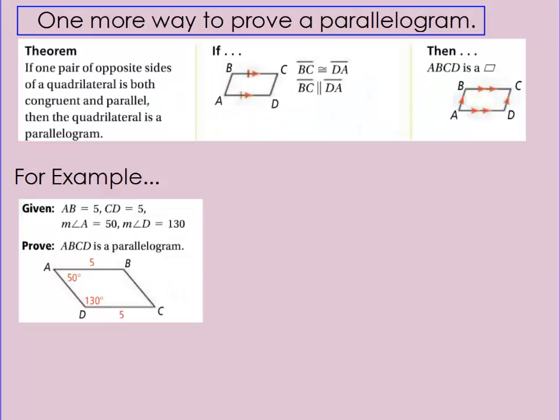Now, one other way to prove a parallelogram is this. If one pair of opposite sides of a quadrilateral is both congruent and parallel, then you have a parallelogram. In this example, BC and AD are both congruent to each other and parallel, so we can say it's a parallelogram.